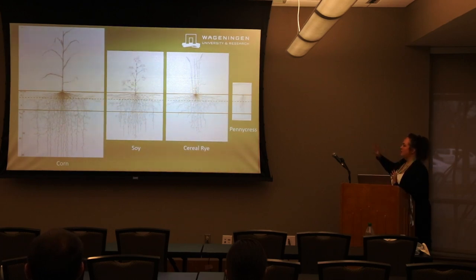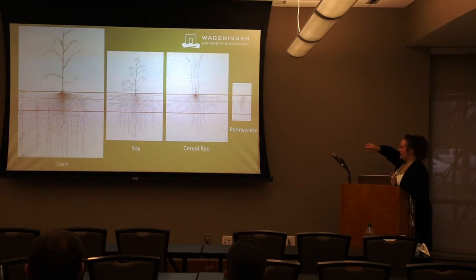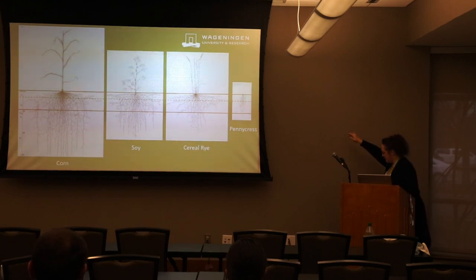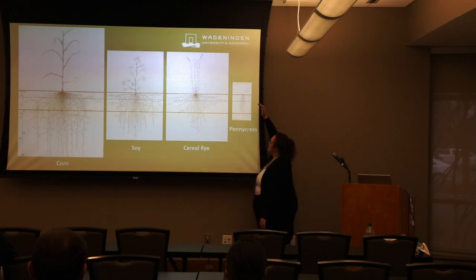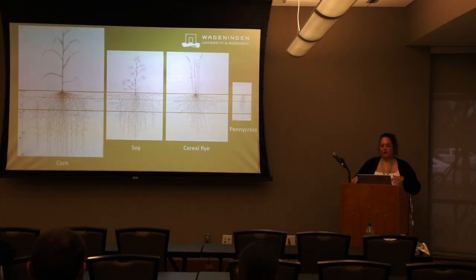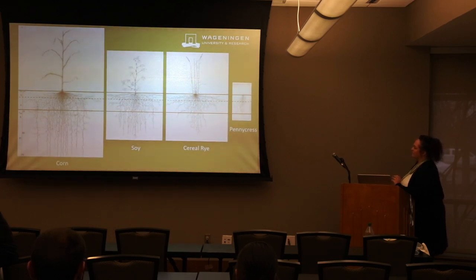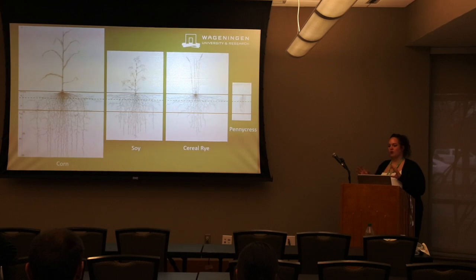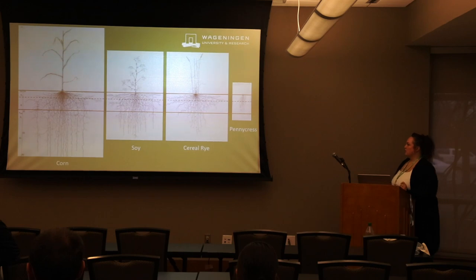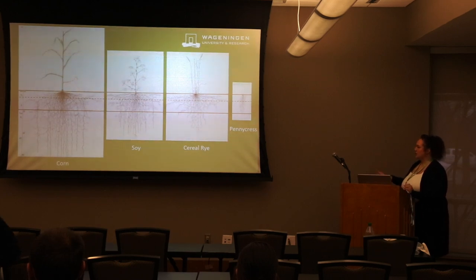Before getting into the results, I wanted to orient you to the root systems of these plants. I have corn, soy, and our cereal rye and pennycress as single cover crops shown here. The top line is the soil surface, then 15 centimeters, and then 45 centimeters, our deepest sampling depth. Corn and soy have pretty extensive root systems. With cereal rye, the roots start to thin at our deepest sampling point; with pennycress, we're essentially completely outside of the root zone.